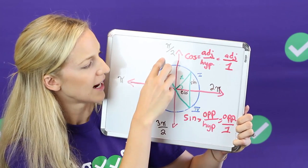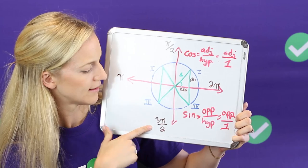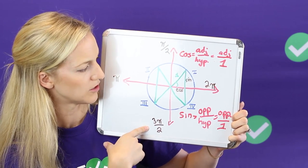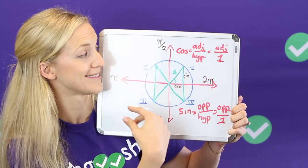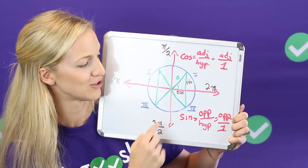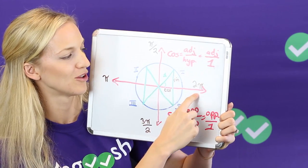So 90 degrees is pi over 2, 180 degrees is pi, 270 degrees is 3 pi over 2, and 360 degrees is 2 pi. If nothing else just memorize these things: pi over 2, pi, 3 pi over 2, and 2 pi. It's really going to help you for the test question we're going to look at soon.